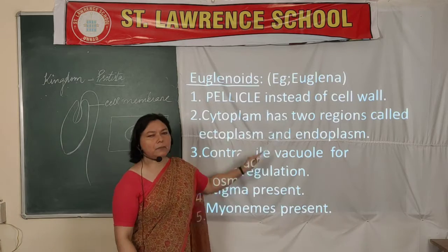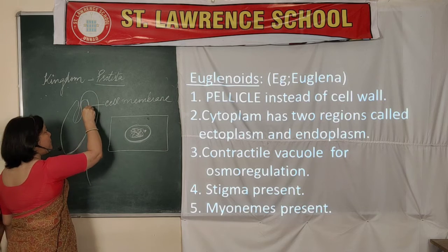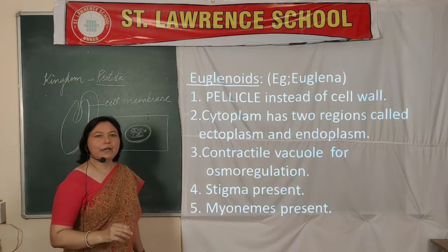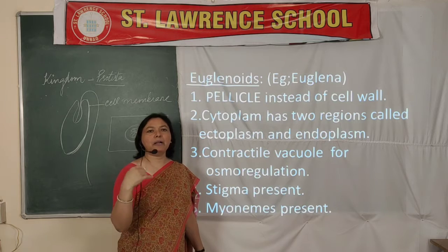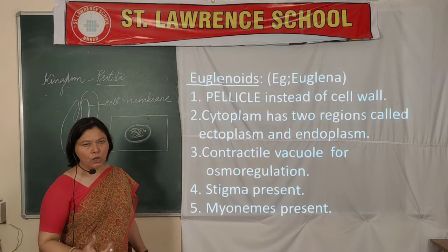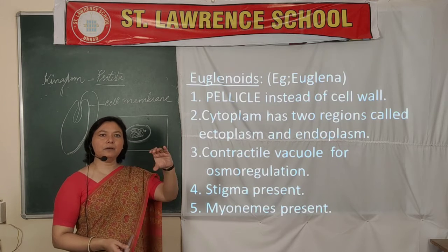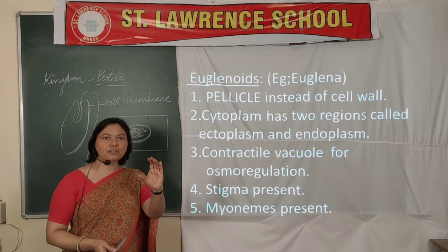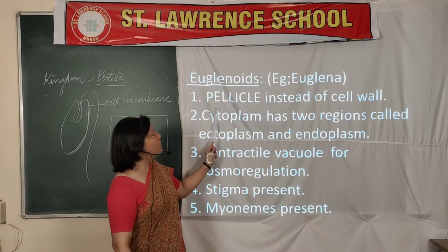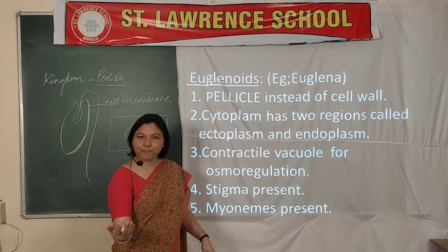Euglenoids have a pellicle — a tough membrane that surrounds the cell membrane. It is not a cell wall, but it provides flexibility to the organism. Euglena can move in a very beautiful manner and change its shape slightly because of the presence of this pellicle. So pellicle is present instead of a cell wall.